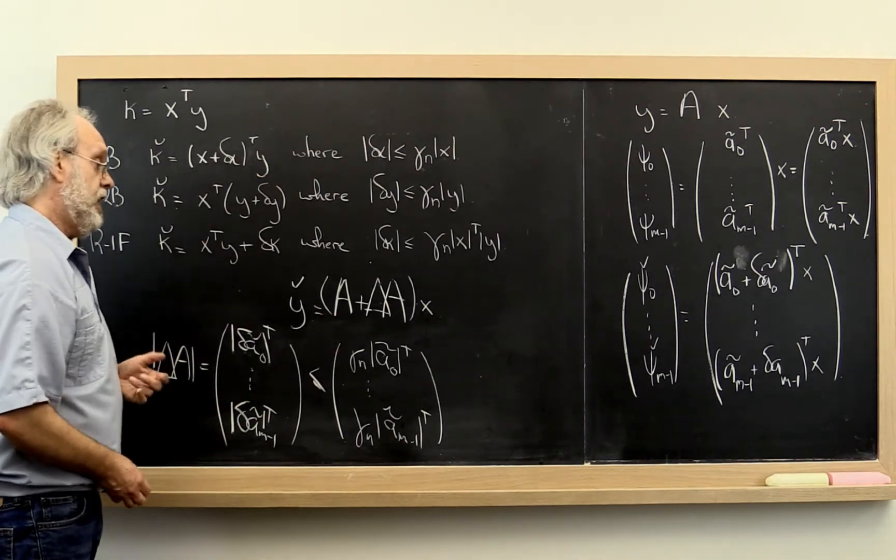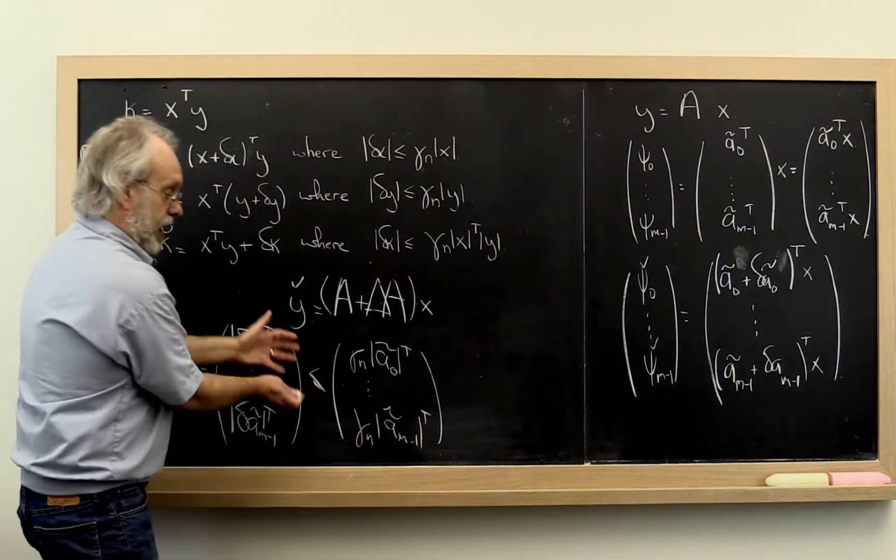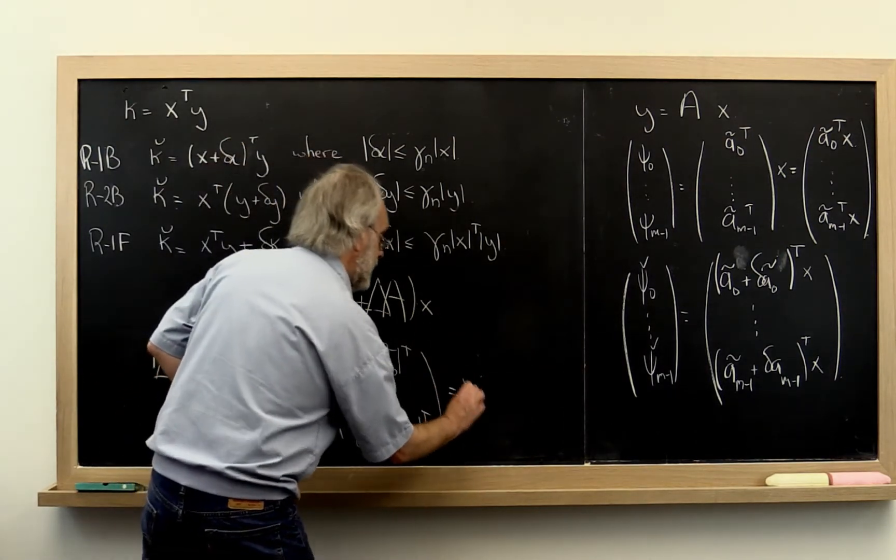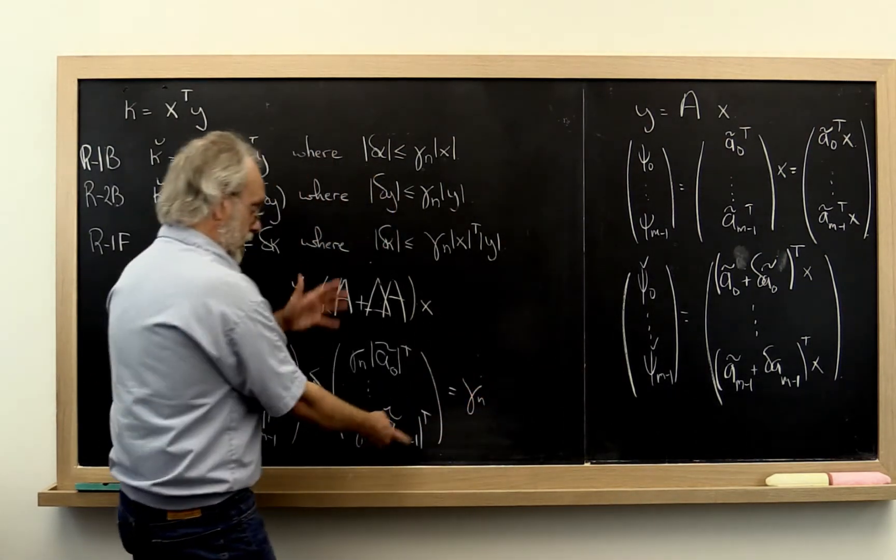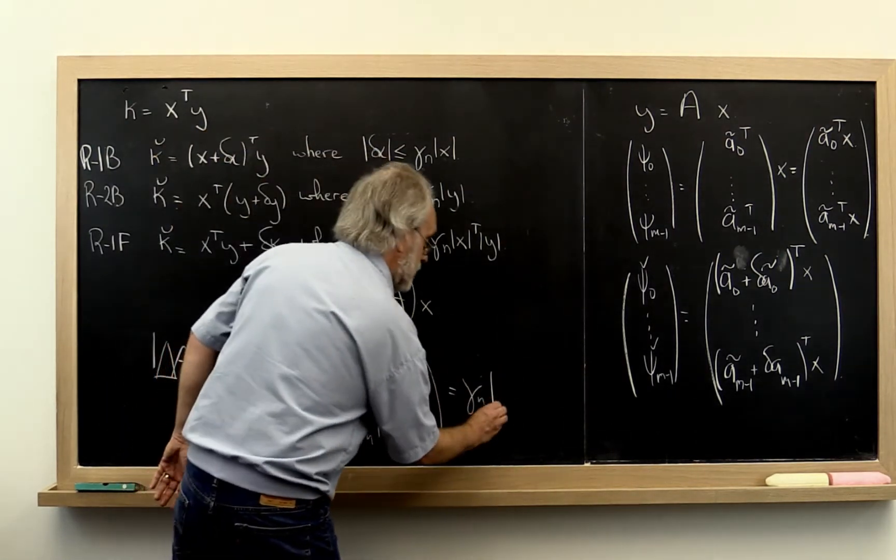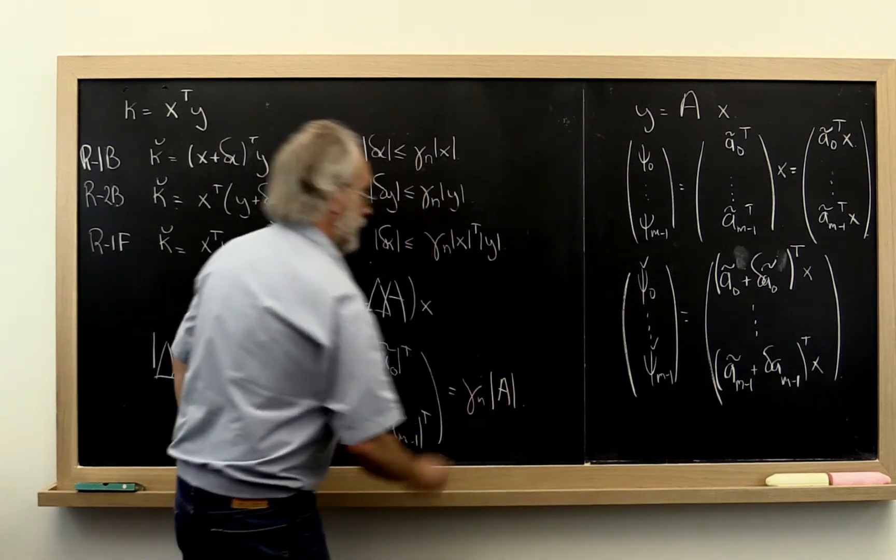And that then we can factor out the gamma n. It's a scalar. So we can say that's equal to gamma n times, and if you think about it, this is just the absolute value of the matrix A.